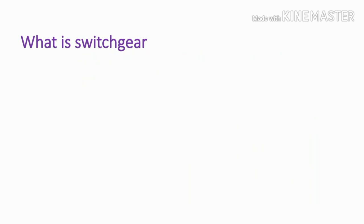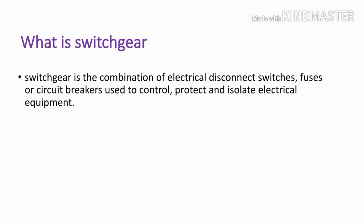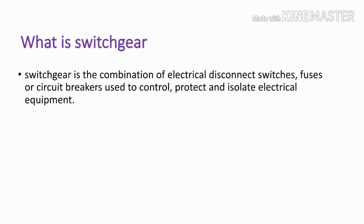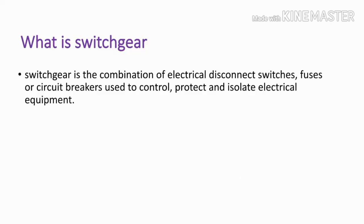For a normal switch, it helps to control low voltage, like up to 240 volts. For higher voltages — something like 3.3 kV, 6 kV, and 11 kV — we need higher-rated components. Switchgear is the combination of electrical disconnect switches, fuses, or circuit breakers used to control, protect, and isolate electrical equipment.